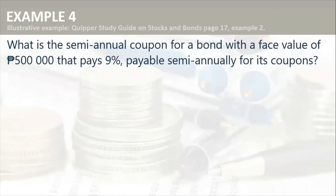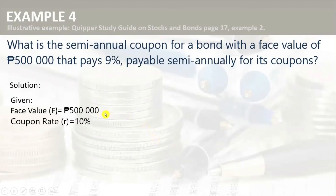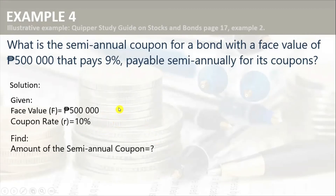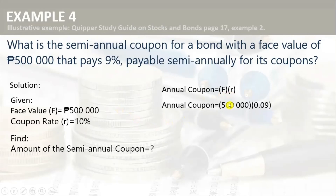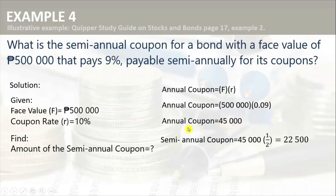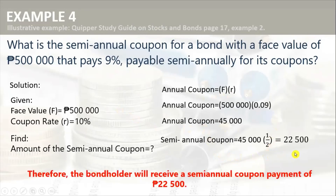What is the semi-annual coupon for a bond with a face value of 500,000 pesos that pays 9% payable semi-annually? Given: face value = 500,000 pesos, coupon rate = 10%. To find the annual coupon, multiply the face value by the coupon rate: 500,000 × 10% = 45,000 pesos for the annual coupon. Since we are looking for the semi-annual coupon, we divide by two, giving us 22,500 pesos.